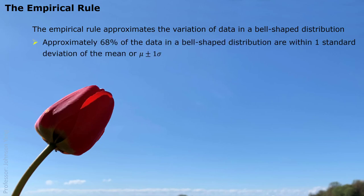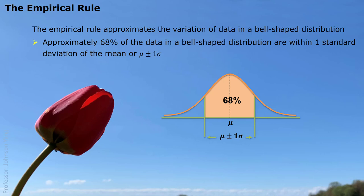The first statement: approximately 68% of the data in a bell-shaped distribution are within one standard deviation of the mean. If the data collection has mean mu — the average or center value — we measure the distance, standard deviation sigma, as shown by the red line on screen. Both sides give us mu minus sigma on the left and mu plus sigma on the right. This interval is expressed as mu ± 1 sigma, and about 68% of the data are located in this interval.